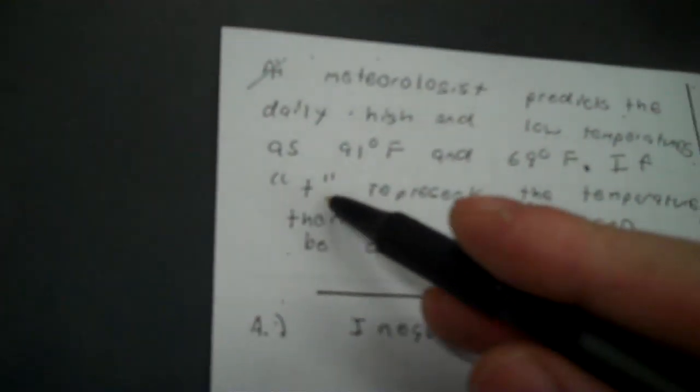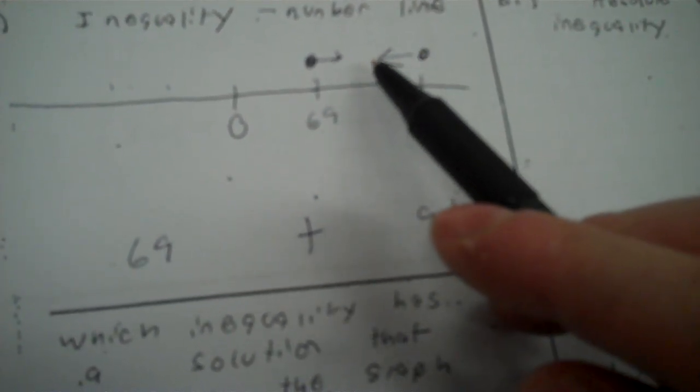Now, here's how you represent that with an inequality. They want you to use a T variable. You put 69 on one side, you put 91 on the other. Now, since I have T before the 91, it's less than. It goes that way, so it's less than or equal.